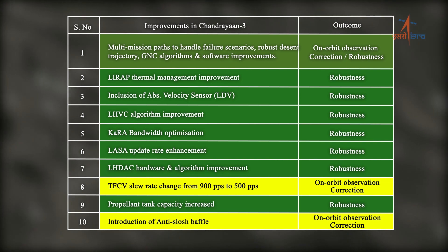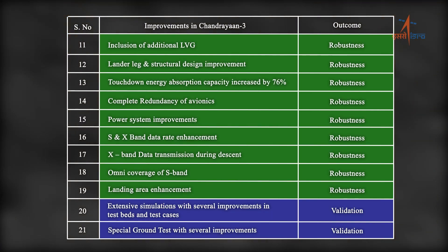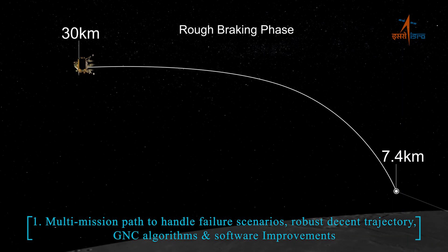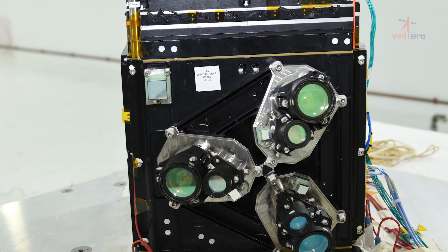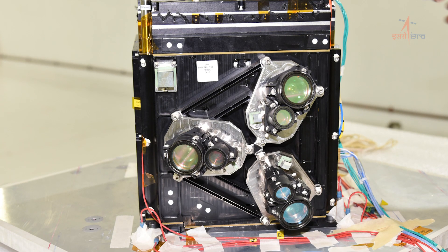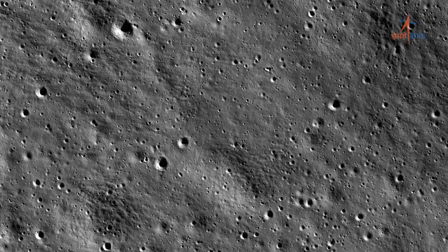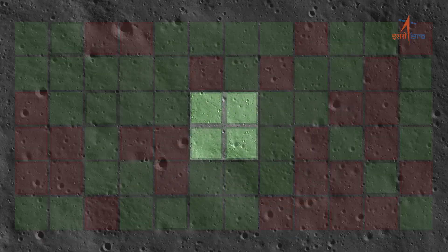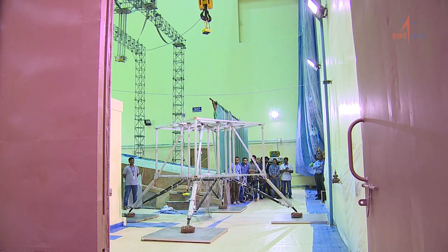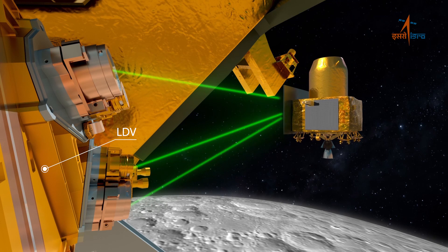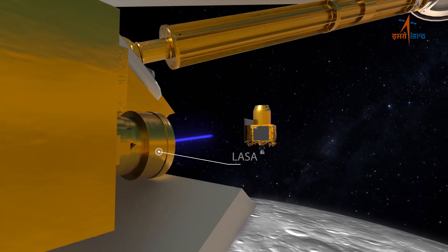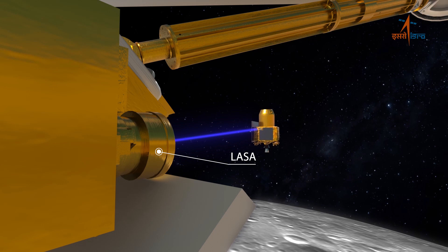The mass advantage obtained from the propulsion module has been used for improving the robustness of the lander module through: improved descent trajectory, enhanced guidance algorithms, inclusion of an indigenously developed new absolute velocity sensor, complete redundancy implementation, overall system improvisation, enhanced lander leg design to handle higher touchdown velocities, thorough characterization of the landing site using Chandrayaan-2 OHRC camera, extensive ground testing, and on-orbit characterization plan of the Chandrayaan-3 lander before power descent.